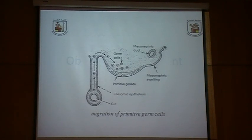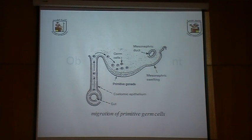You can see from the schematic diagram the path of migration — the migration of the primitive germ cells as they migrate from the yolk sac into the site of the primitive gonad.